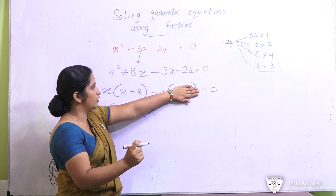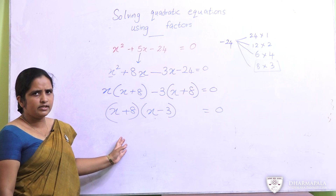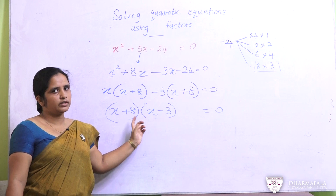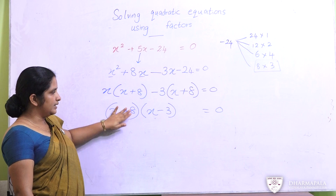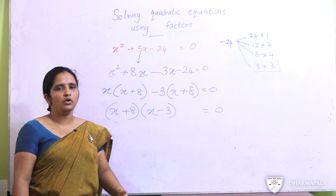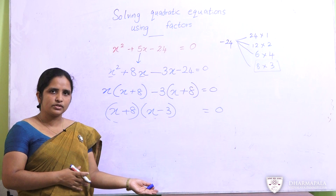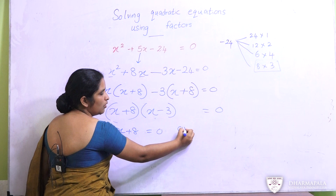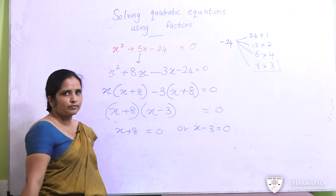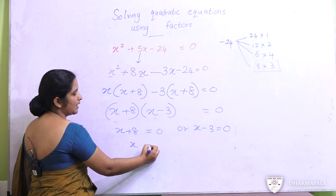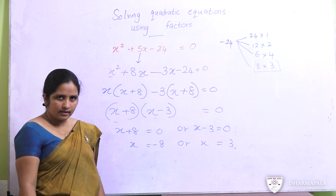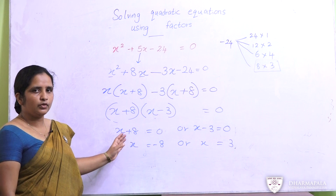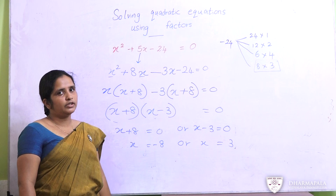The meaning of this equation is that the multiplication of these two terms equals zero. That means either x plus 8 equals zero, or x minus 3 equals zero — because we know that if either factor is zero, the product is zero. So from x plus 8 equals 0 we get x equals minus 8, and from x minus 3 equals 0 we get x equals plus 3. We have got two answers: x equals minus 8 or x equals 3.